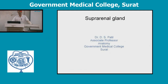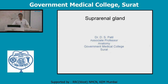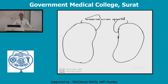Today we will cover the suprarenal gland along with some minor structures in relation with the posterior abdominal wall. The suprarenal gland is located in relation with the upper end of both kidneys — the right kidney and left kidney. These two suprarenal glands lie extraperitoneally and are covered by two coverings: true and false.